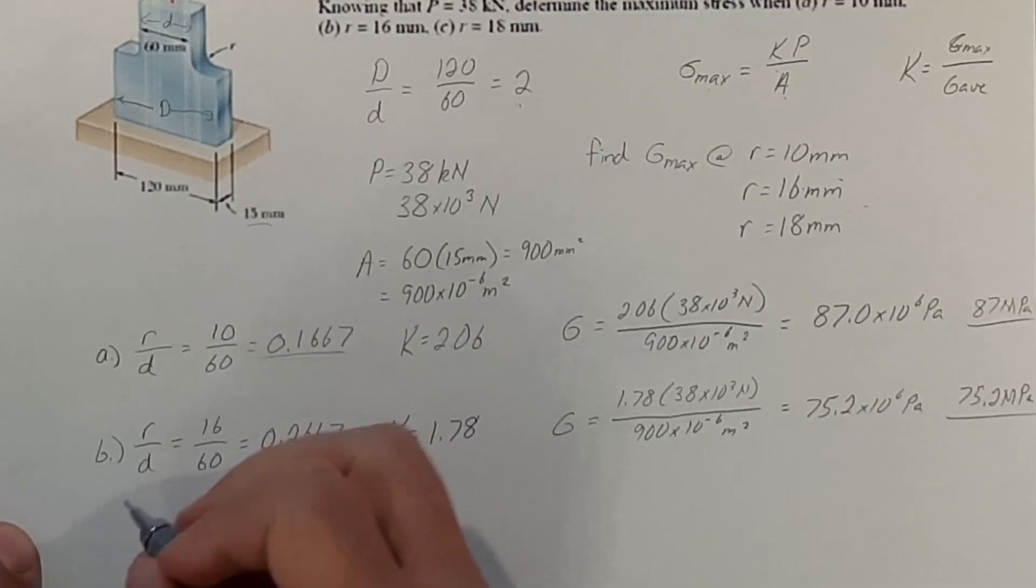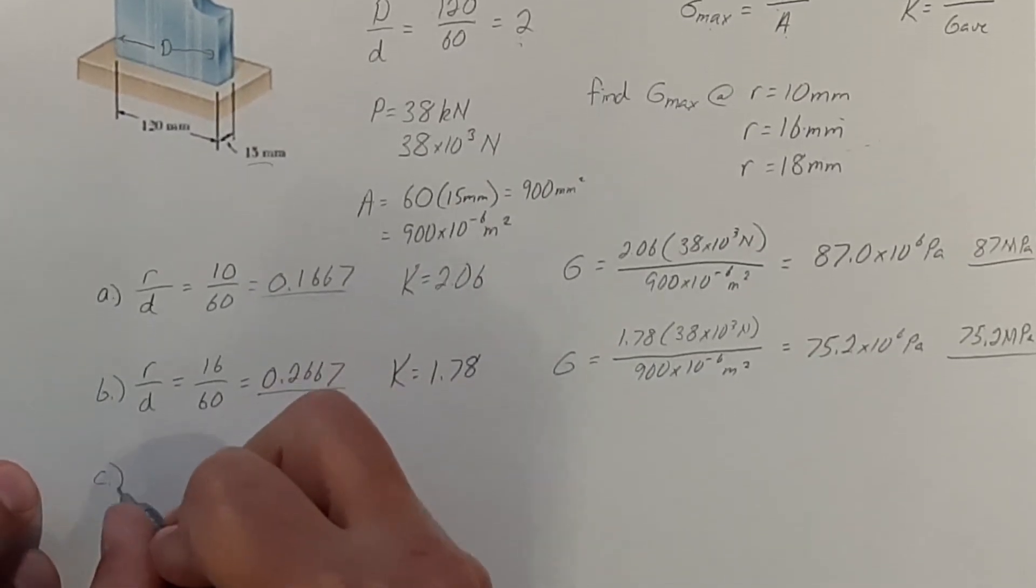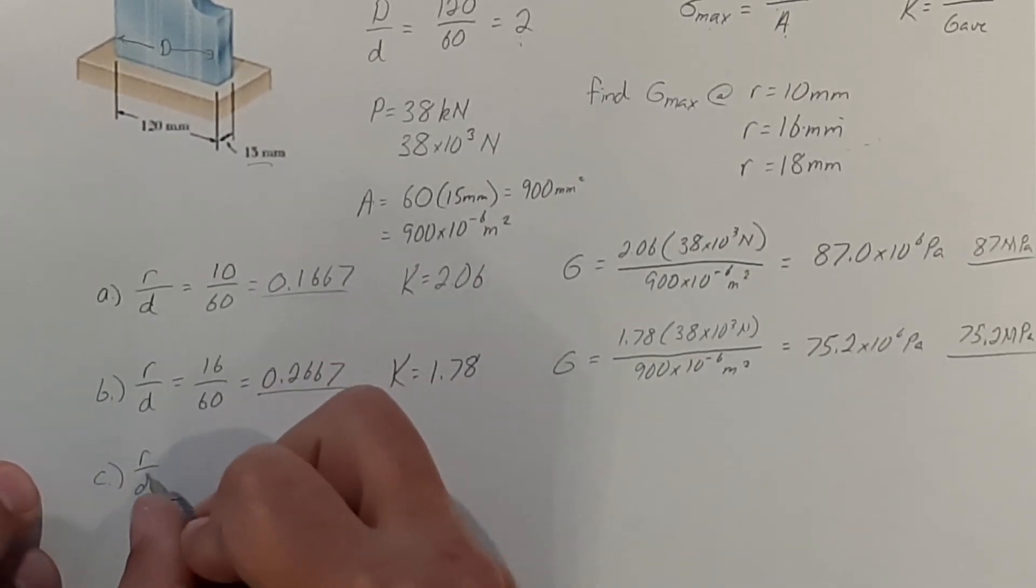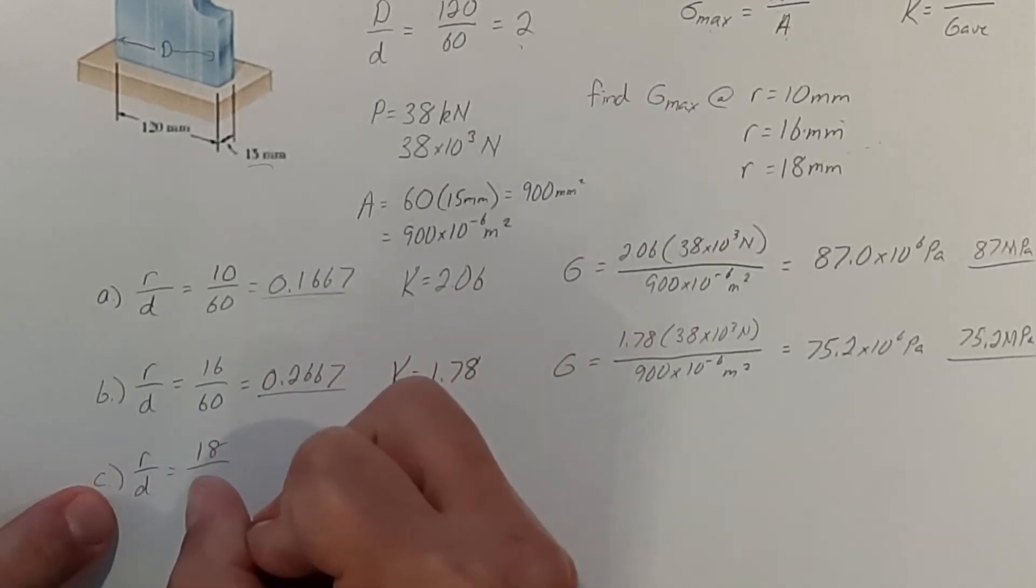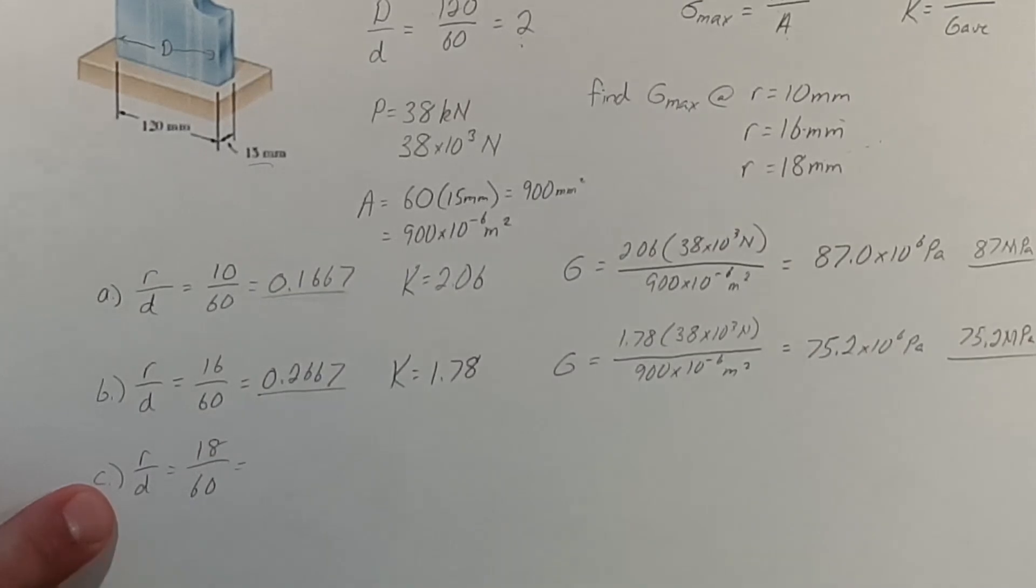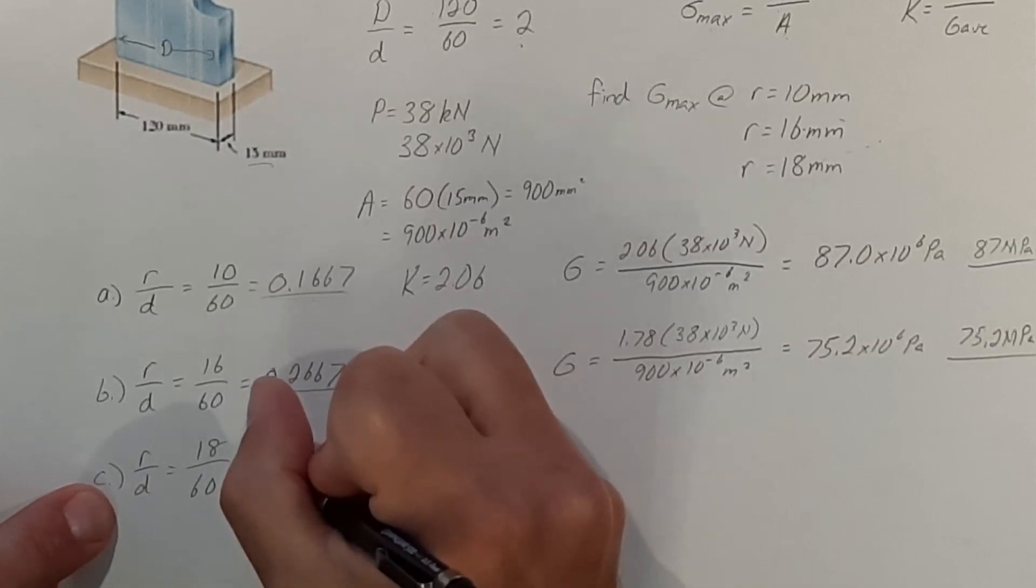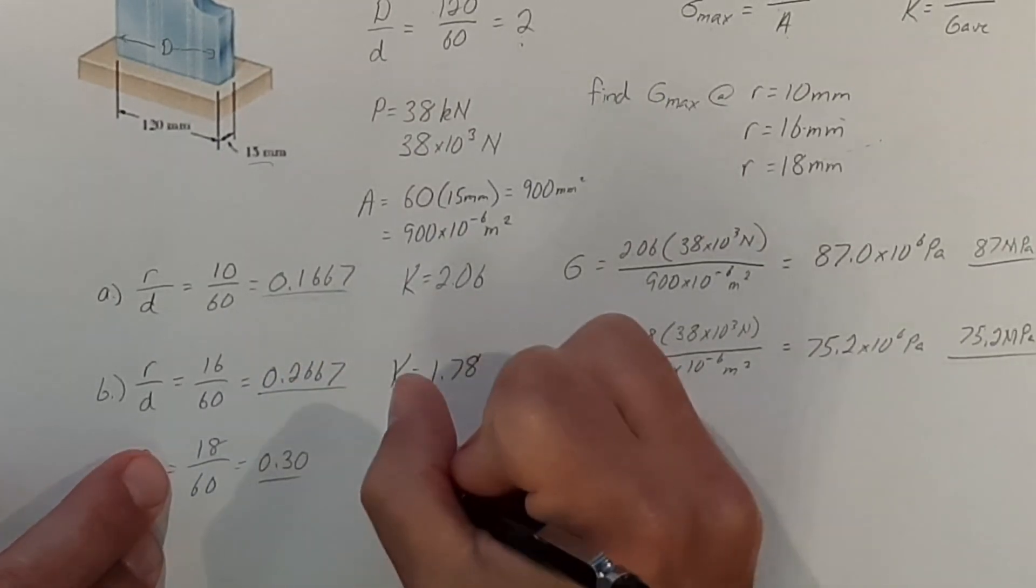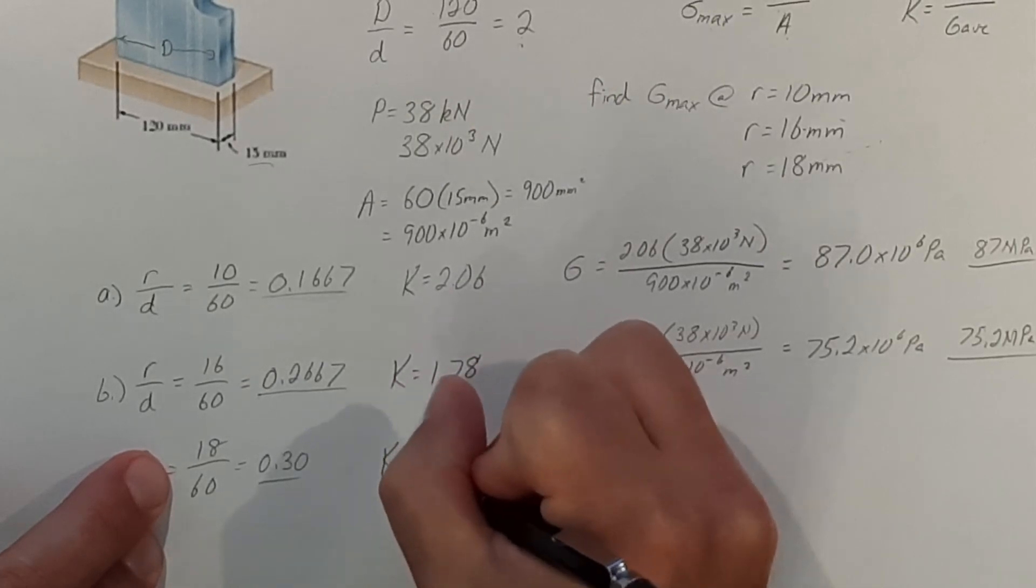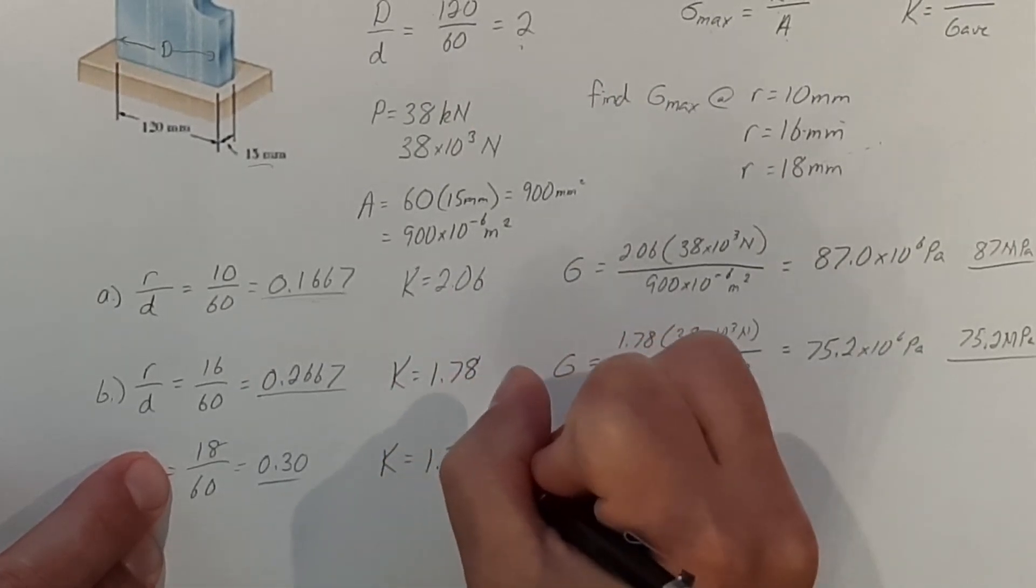And real quick for the third one, C, we have R over D, which now we're at 18 millimeter fillet over 60. And that is going to be 0.30. Find that on our chart and we get a K value of 1.75.